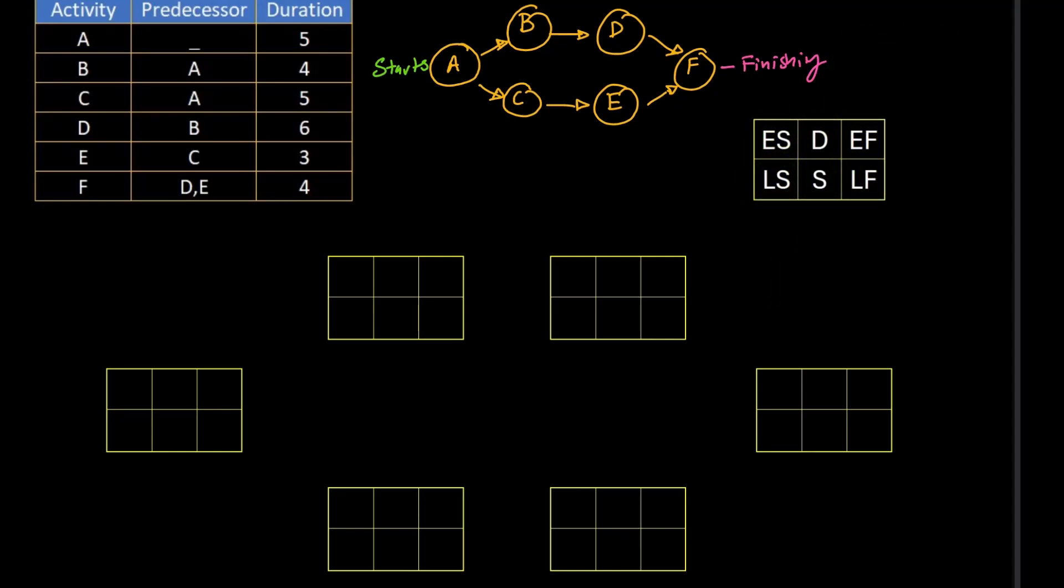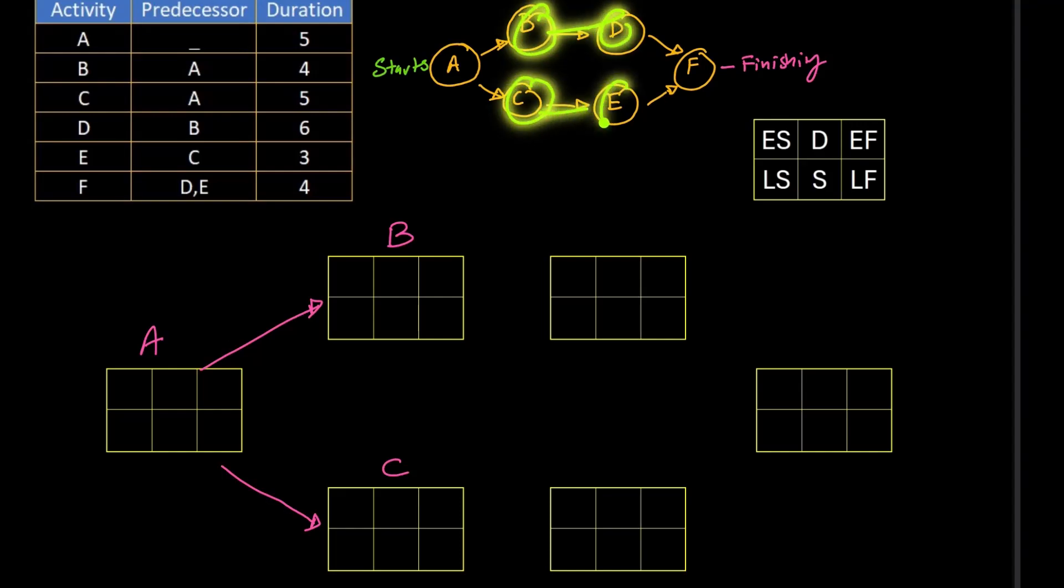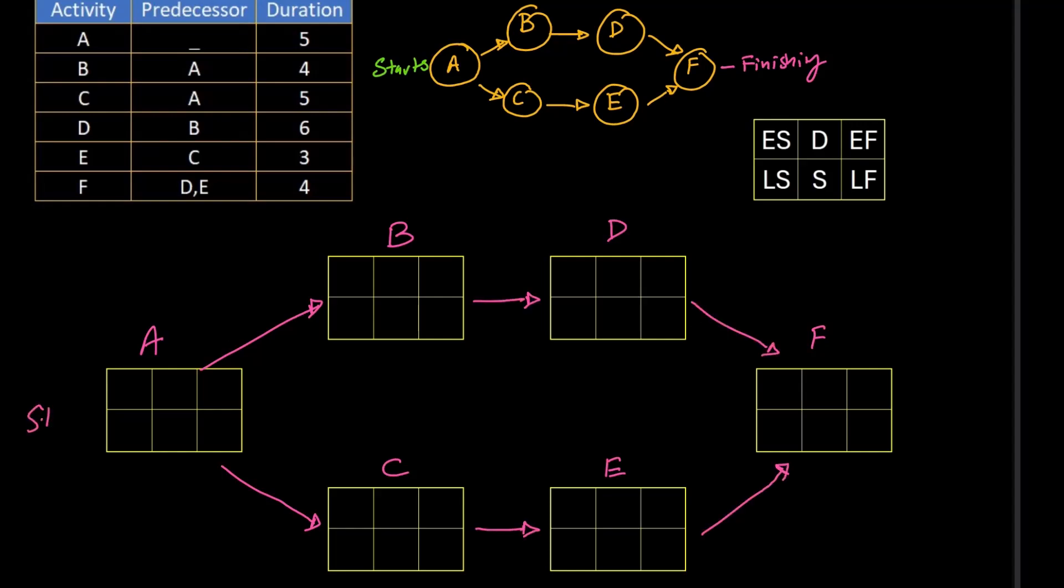Firstly we will label the activities. This is A which initiates B and C. After B is finished, D starts, and after C is finished, E starts. And the final activity is F. That's the start of the project and that is the finished project. First we will fill out the easiest part which is the duration of the particular activity. A duration is 5, B's duration is 4, C's duration is 5 and so on.